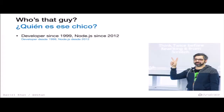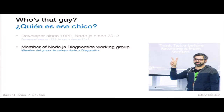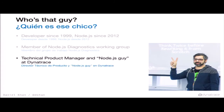So who is this guy? I'm Daniel Kahn. I'm a developer since 1999 — which means I'm reaching the point where people in the audience were born when I started in the industry. I've been doing Node.js since 2012, and I'm a member of the Node.js Diagnostics Working Group.